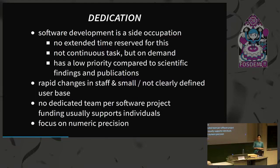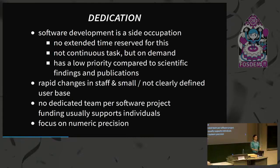The quick changes of staff in scientific labs make it difficult. People are not educated from the university side in software development, so whoever joins your lab needs to be educated in the best practices there — and then typically they leave already. There's also not a dedicated team developing a certain piece of software, but many people working across scientific projects, with whoever has an overlap contributing a tiny bit. And a difference from business software: in science, numeric precision is a highly valued aspect.